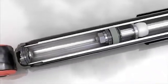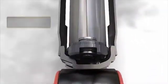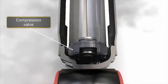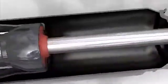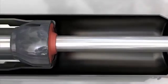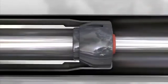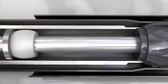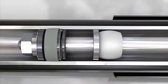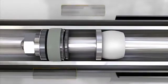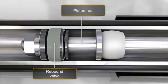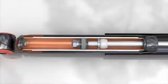Both tubes are separated and a compression valve is located at the base of the working chamber tube. The standard design of any twin tube shock absorber also includes a piston rod with a piston valve moving up and down inside an oil-filled cylinder known as the working chamber.